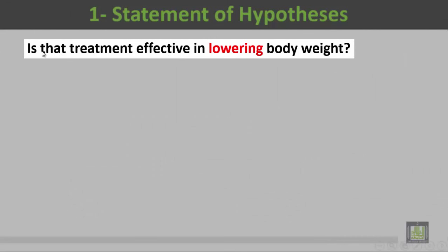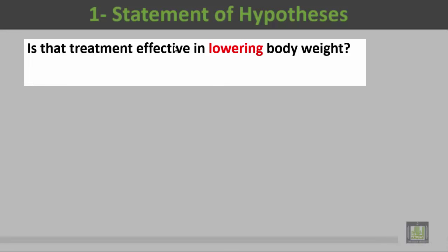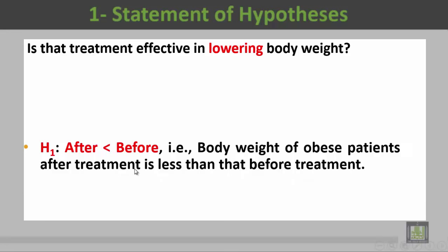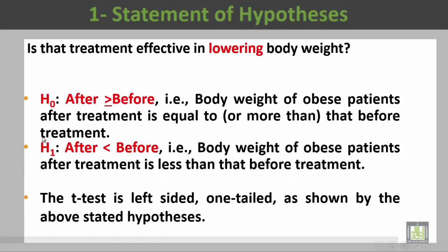The research question is: is the treatment effective in lowering body weight? From the research question, we will write H1. If the treatment is effective in lowering body weight, the weight after treatment will be less than the weight before treatment — after is less than before. That is to say, the body weight of obese patients after treatment is less than that before treatment.